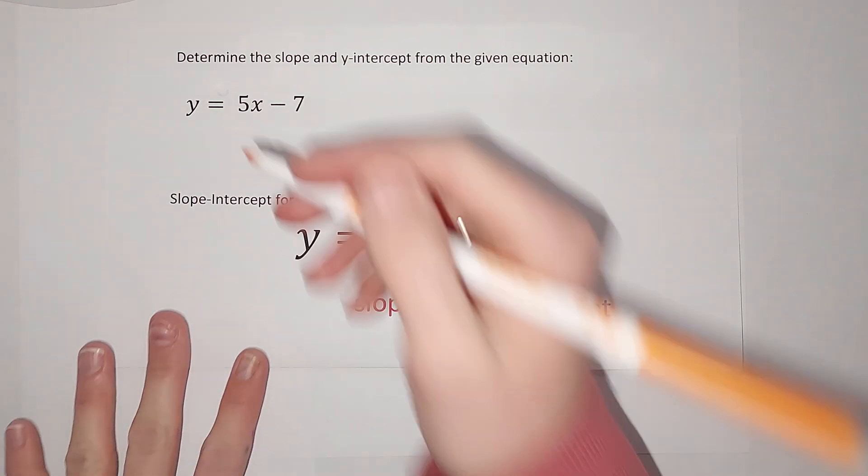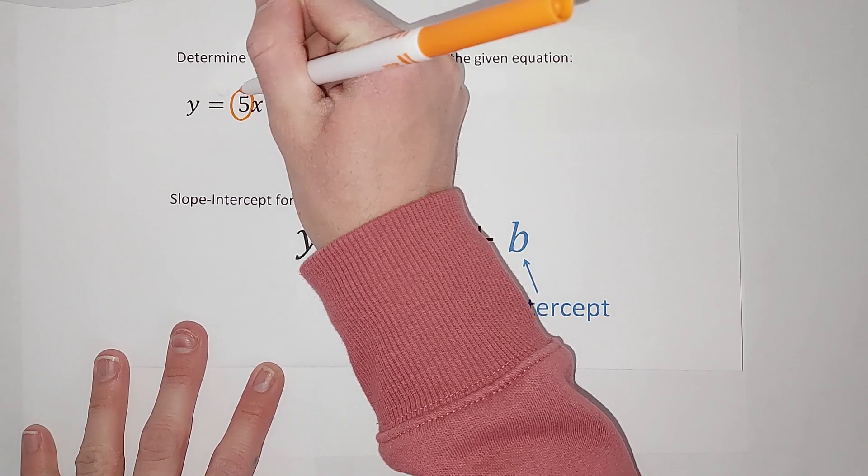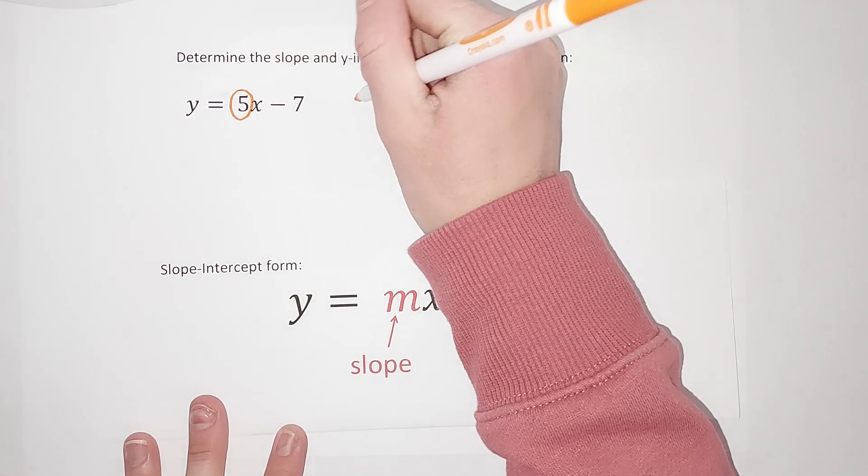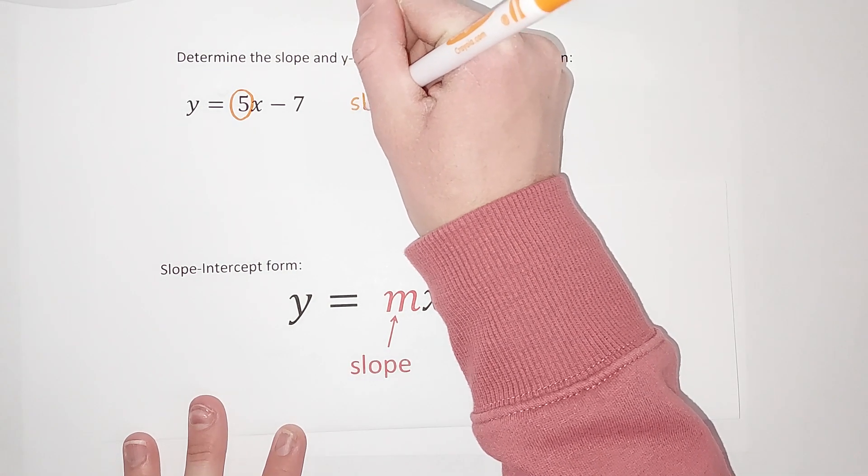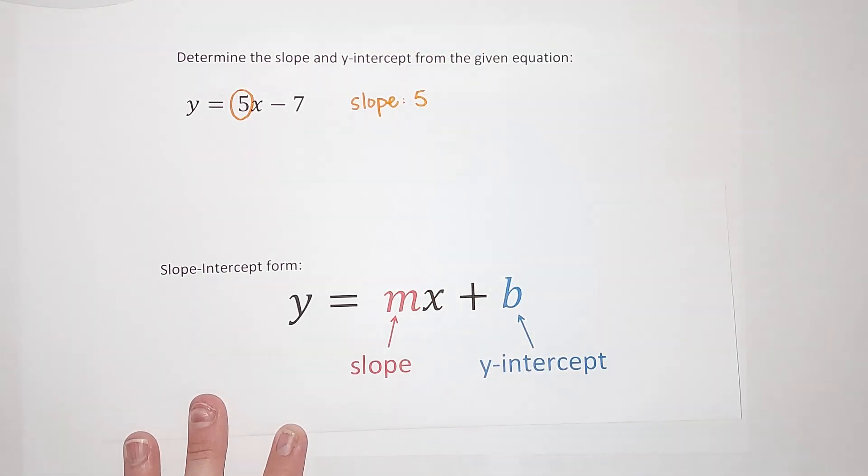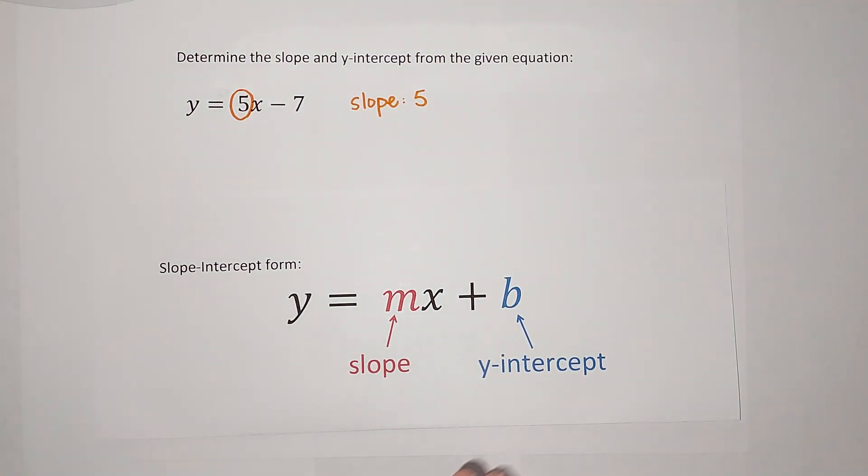So my slope here is 5. And you'll often see people just say m equals 5 for the slope, or you could put slope equals 5, either way. So I'm going to put slope is 5. Again, you could also write as m equals 5 if you wanted to.